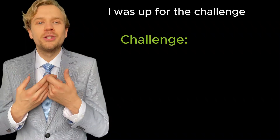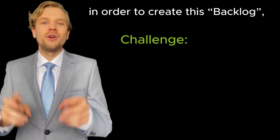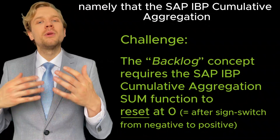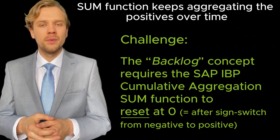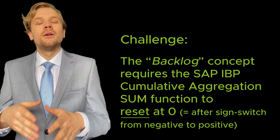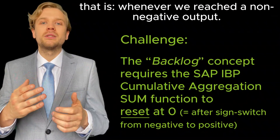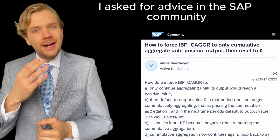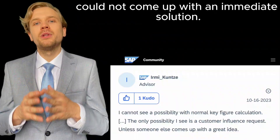I was up for the challenge, but I quickly realized that there was one problem in order to create this backlog: namely that the SAP IBP cumulative aggregation sum function keeps aggregating the positives over time. Whereas in our backlog case, we would like it to reset whenever we passed the cutoff value of zero, that is, whenever we reached a non-negative output. But how to achieve this reset? I asked for advice in the SAP community, but SAP colleagues could not come up with an immediate solution.